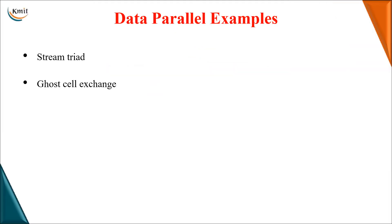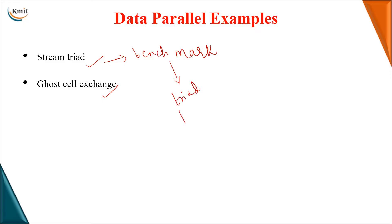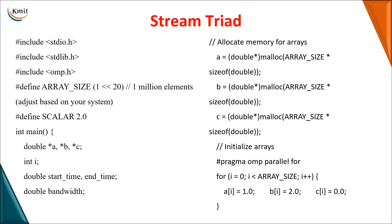Coming to the data parallel examples, we have stream triad and ghost cell exchange. Stream triad is a benchmark — as we have already seen, a benchmark is a program which helps you analyze different parameters. The stream triad benchmark is used for calculating the bandwidth of a given program in parallel computing.